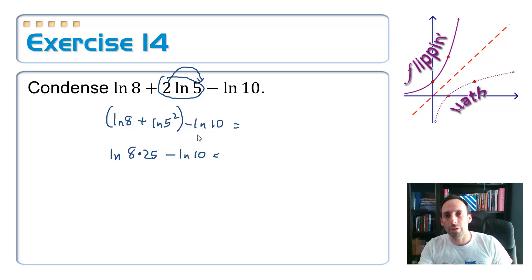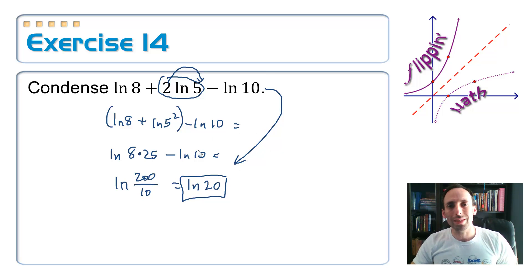Okay, so now I have a difference, and a difference condenses down to division. So, this will be equal to the natural log of 8 times 25 is 200, divided by 10. And then I'll just go ahead, and because I can, make that the natural log of 20 when I divide. Look at that. I took this big old long thing, and it just simplifies down to the natural log of 20. That's satisfying.